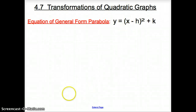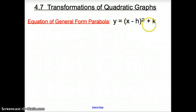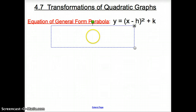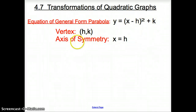Ladies and gentlemen, welcome to 4.7 Transformations of Quadratic Graphs. We are going to kick things off today with an equation of a general form of a parabola, also known as vertex form, where y equals the quantity x minus h, that quantity squared, plus k. Your numbers go in for h and k, and there could also be a number in front of the parentheses. Our vertex is going to be h and k, and the axis of symmetry will be the same as your h.